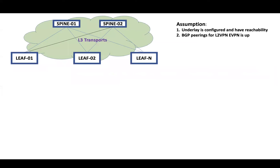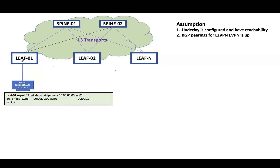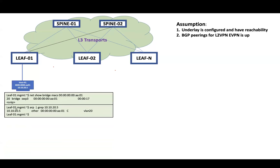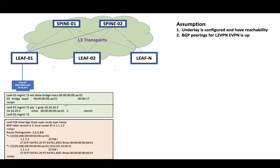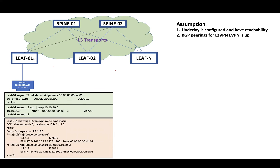Let's understand a bit more about type 2 route. When a host comes up, it will send a GARP to inform others of its MAC address and IP address. The leaf, also known as VTEP, will learn the MAC address from the ingress frame and store it in the MAC address table. It will also learn IP information from the GARP and store it in the ARP table. This MAC and IP information will then be installed into the BGP E-VPN table.